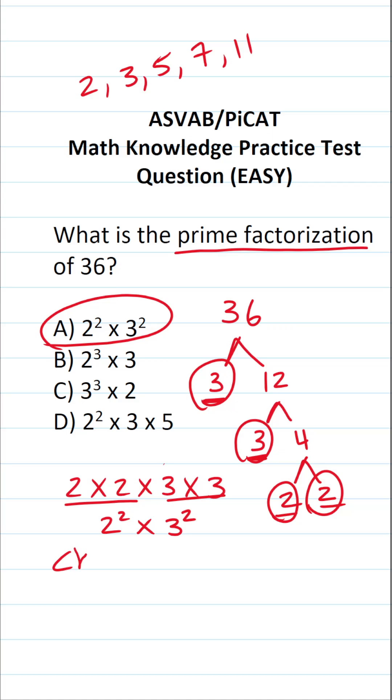And for this problem, it's very easy to quickly check your work. 2 squared is the same thing as 2 times 2, which is 4. 3 squared is the same thing as 3 times 3, which is 9. 4 times 9 is in fact 36. So I'm confident that we found the correct prime factorization of 36.